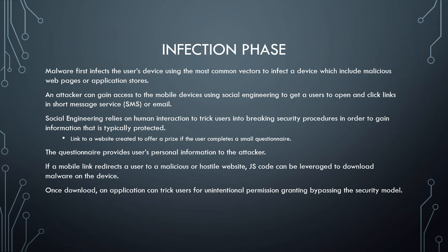In the infection phase, the malware first infects the user's device using the most common vectors, which include malicious web pages or application stores. An attacker can gain access to the mobile device using social engineering to get users to open and click links in SMS or email. Social engineering relies on human interaction to trick users into breaking security procedures to gain protected information. A link to a website could create an offer for a prize if the user completes a questionnaire, providing personal information to the attacker. If a mobile link redirects a user to a malicious or hostile website, JavaScript code can be leveraged to download malware on the device. Once downloaded, an application can trick users into unintentional permission granting by bypassing the security model.